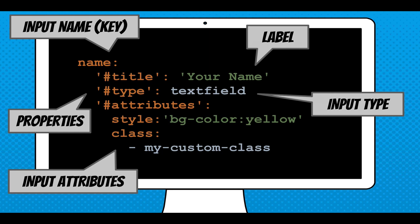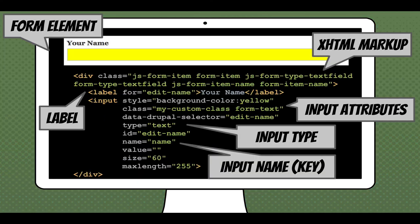Dissecting a single element — this is a 'your name' text field. There's the input key, the label, and properties beginning with hash symbols. The input name is a text field, and I'm including some attributes to stylize it with a background color and custom class. Above is the rendered form element we see in the browser; below is the XHTML markup. You can see the label, input attributes, and type. Defaults are included — the render array just defines the key things you want, and Drupal includes defaults like element size, max length, and extra classes.